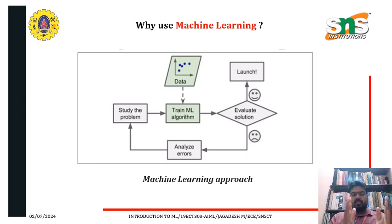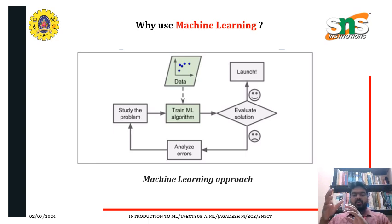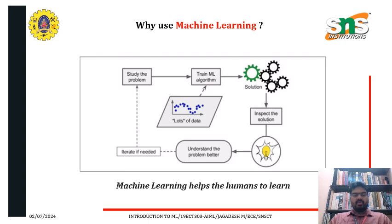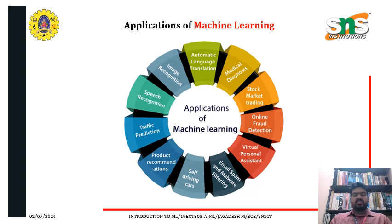In the machine learning approach, the problem is studied and given to the machine learning model. A dataset is provided to train the model, and it evaluates solutions. If there is error, the process continues. If there is no error, the final product is launched. Machine learning helps humans by studying the problem, training the ML algorithm, and continuously inspecting solutions and understanding the problem in a better way until accurate output is achieved.